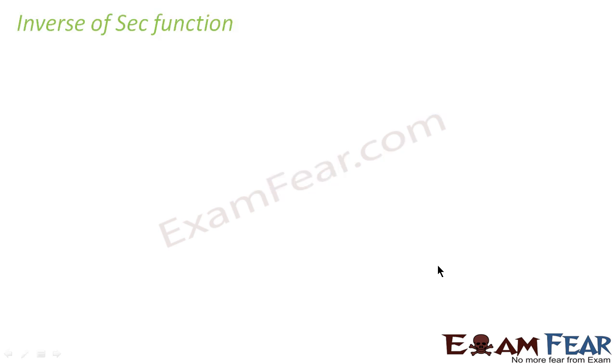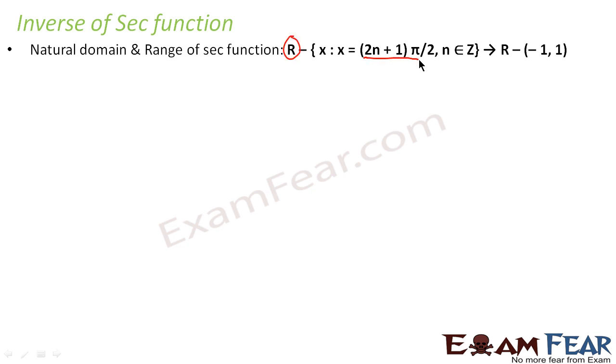Let's take the same thing for sec function we have done for sine, cos and cosec. For sec function, the natural domain is any real number minus (2n+1)π/2 form, because for (2n+1)π/2 form the sec function becomes infinite. The range is any real number that is not in the (-1, 1) interval.